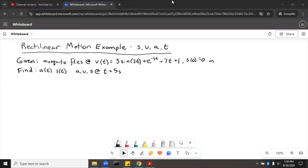In this example, we're going to do rectilinear motion with position, velocity, acceleration, and time. If we're given the velocity of a mosquito, say the mosquito flies at velocity of 3 sine of 2t plus e to the negative 5t plus 7t plus 1 meters per second, initial position is 0 meters, find acceleration and position as functions of time, and also find acceleration, velocity and position at t equals 5 seconds.